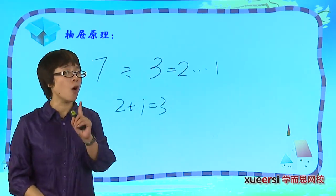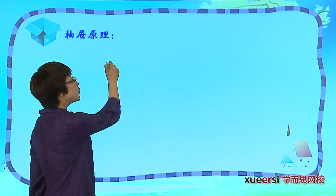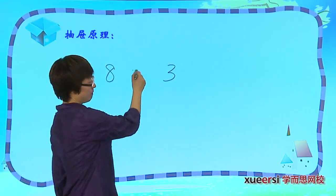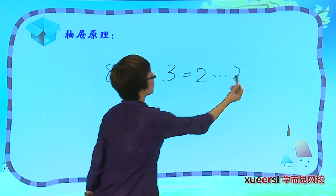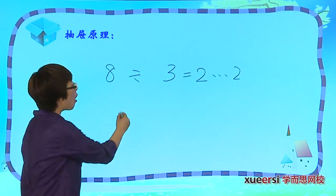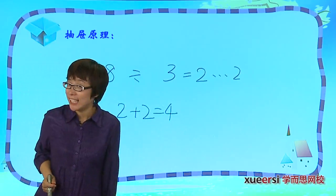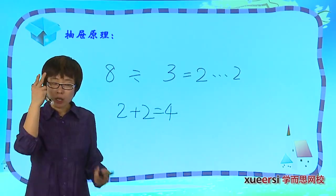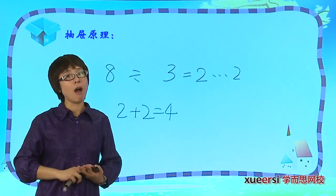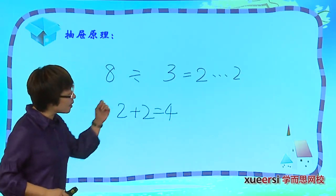肯定有个抽屉里面有三个苹果或者是三个以上的。如果是八个苹果三个抽屉呢？八除以三，商二余二。二加二等于四？仔细想一想，虽然余了两个苹果，可是这两个苹果一定会进到同一个抽屉里吗？那不一定。能保证四个吗？比如说三、三、二，是不是把八个分到三个抽屉里？有抽屉里有四个吗？没有。